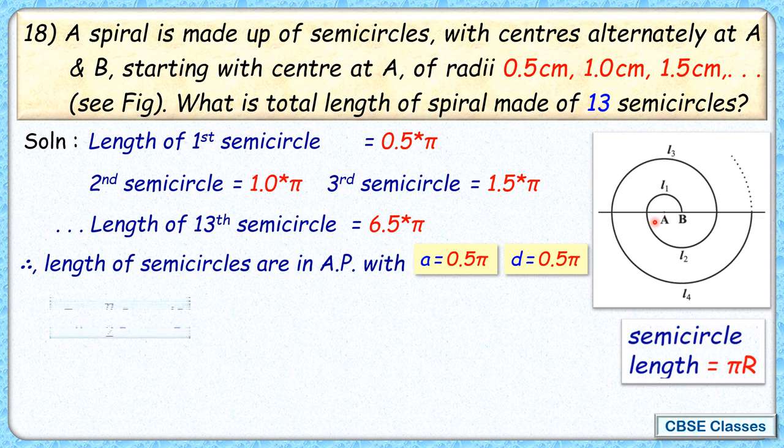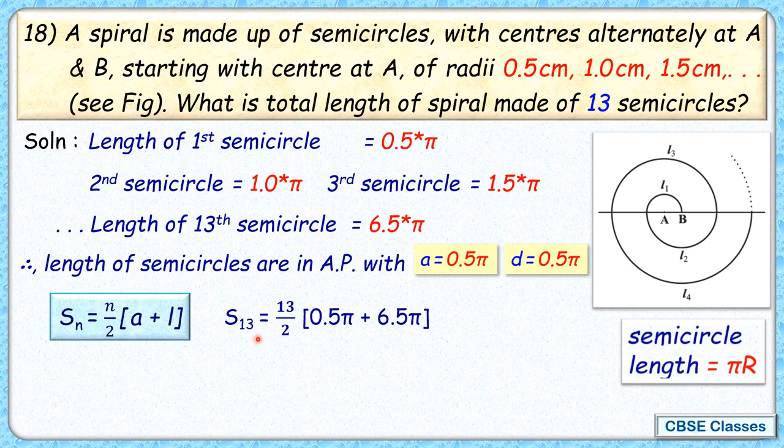We will use the Sn formula. Sn is n by 2 times first term plus last term. First term is 0.5π, last term is 6.5π, and number of terms is 13. Now 0.5π and 6.5π will make it 7π. So S13 is 13 by 2 times 7π, and with π value 22 by 7.